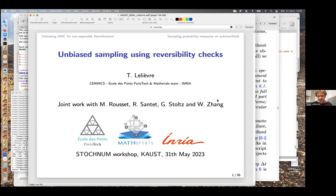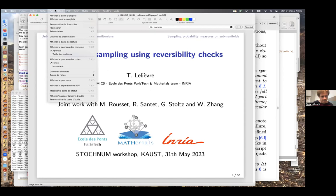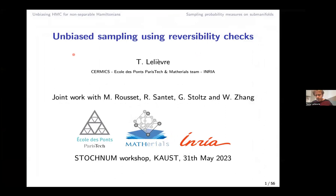I hope the connection is good enough so that you can hear me correctly. I would like to thank the organizers for inviting me, Professor Tamponi and the chair in particular. I'll share my screen now. The talk is about unbiasing some standard MCMC algorithms. I will talk about two typical cases: sampling a Boltzmann-Gibbs distribution associated with a non-separable Hamiltonian, and sampling probability measures on sub-manifolds.